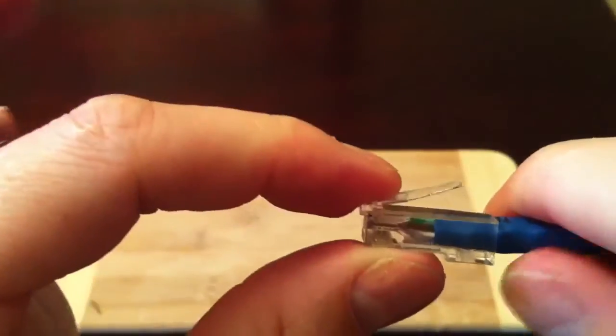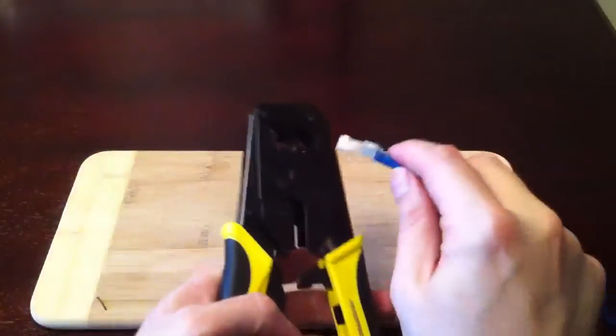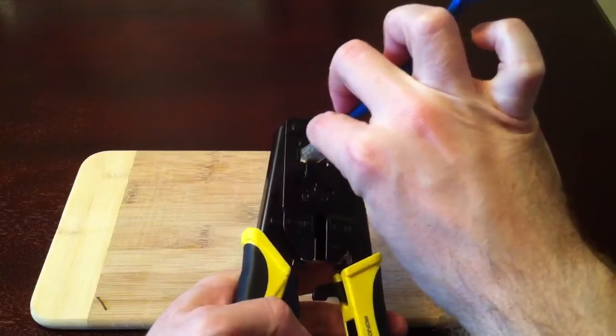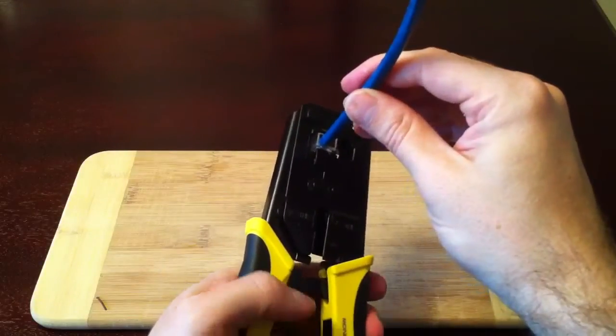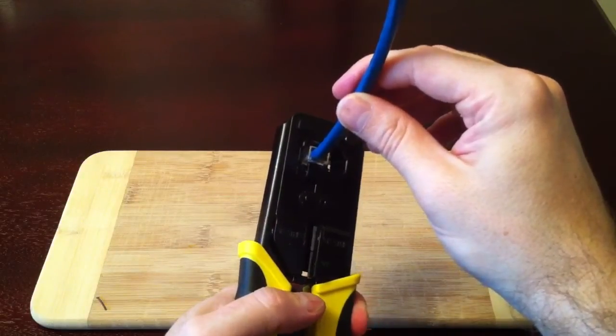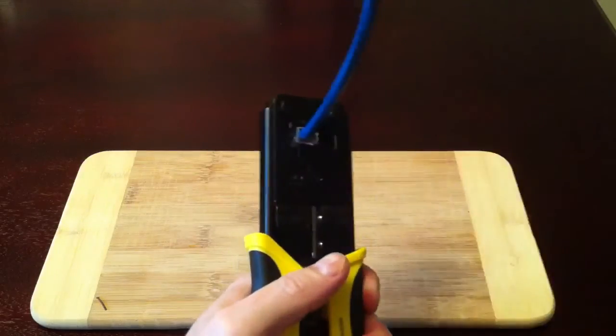Once you have the insert and the cable properly seated inside of the plug, you'll want to get your crimper and insert the plug into the eight pin hole. Once it's in there, give your crimpers a full squeeze to ensure that all the pins are crimped properly.